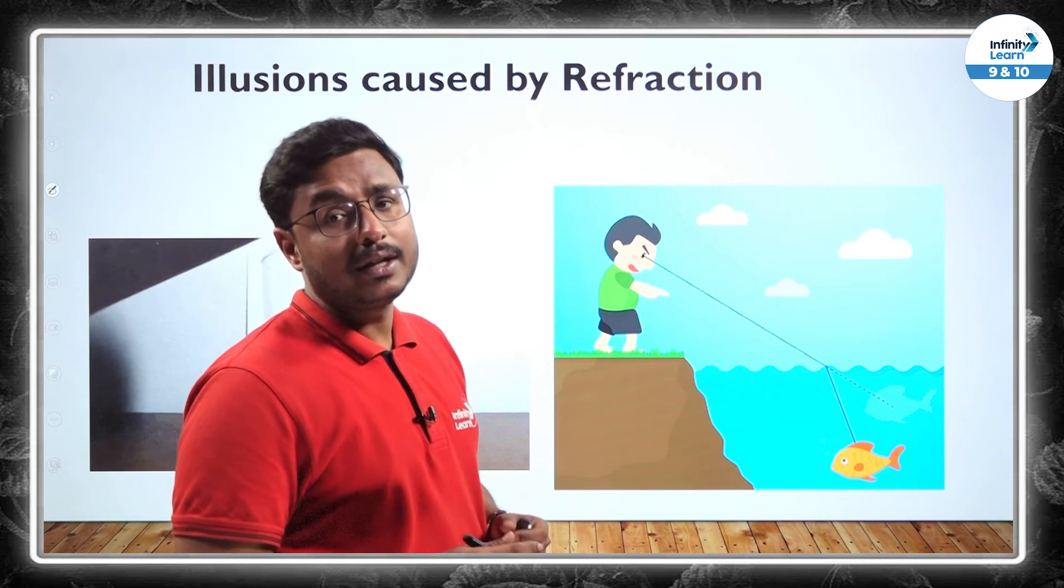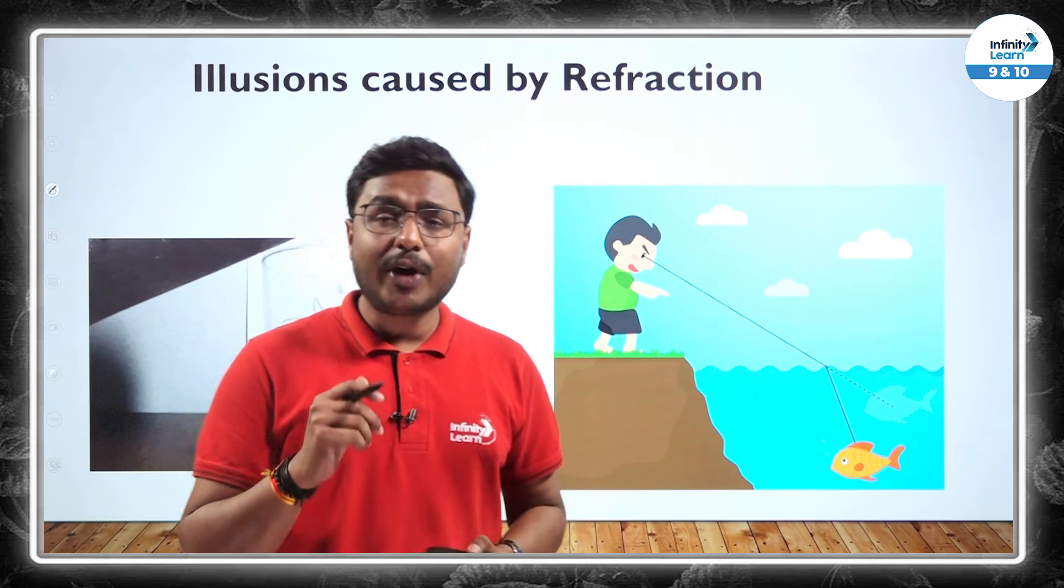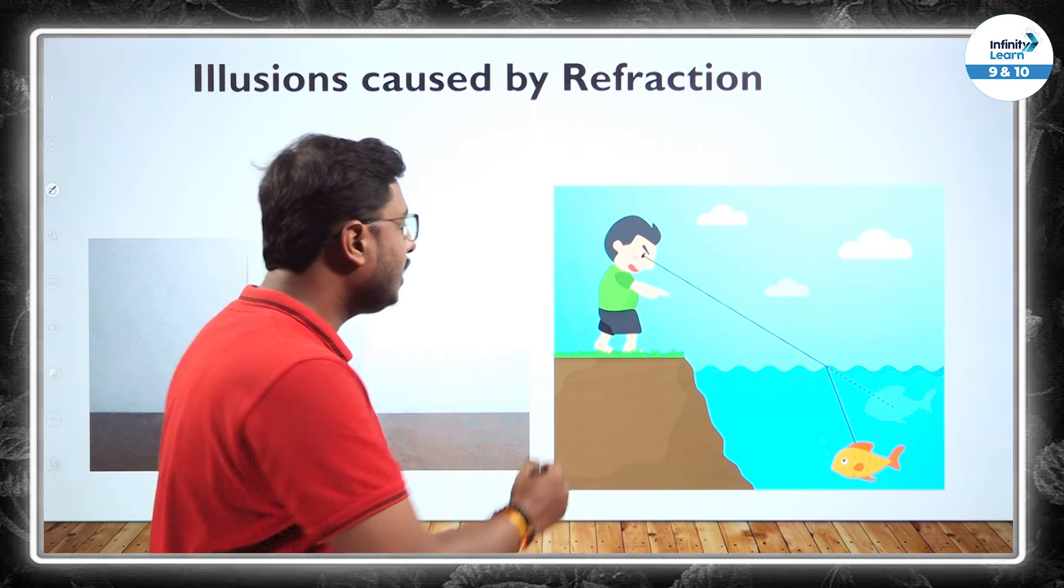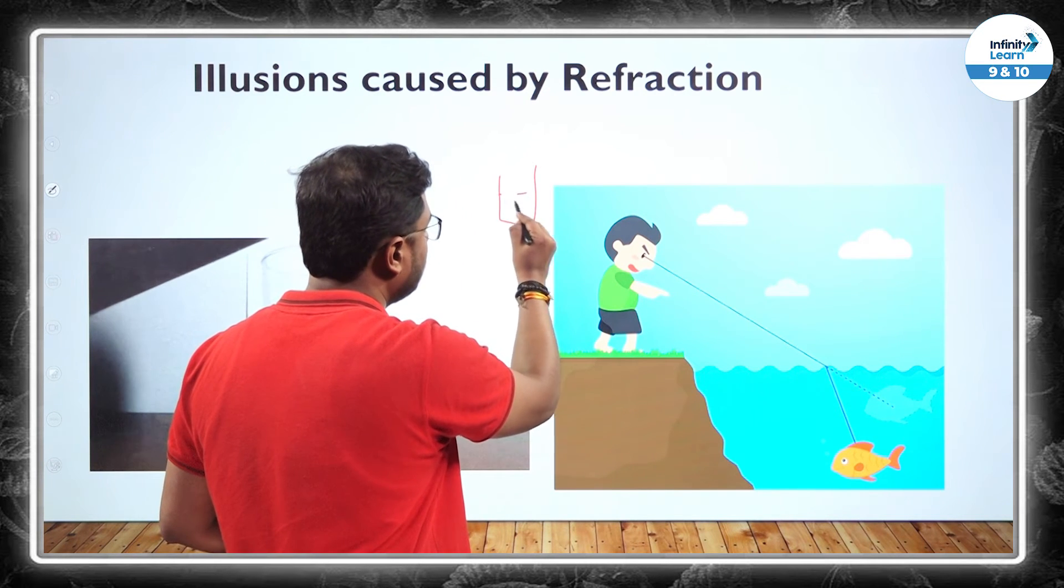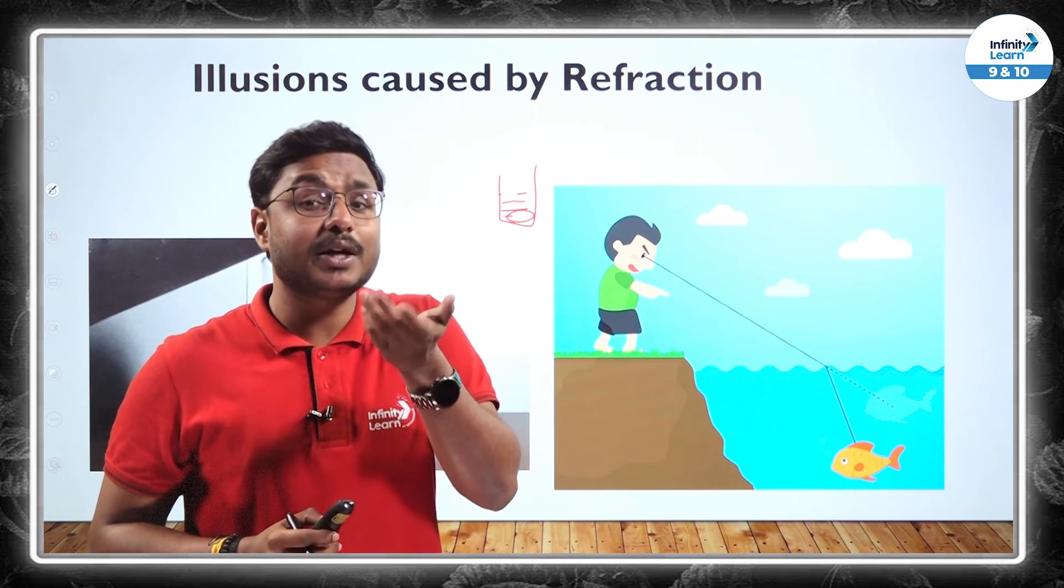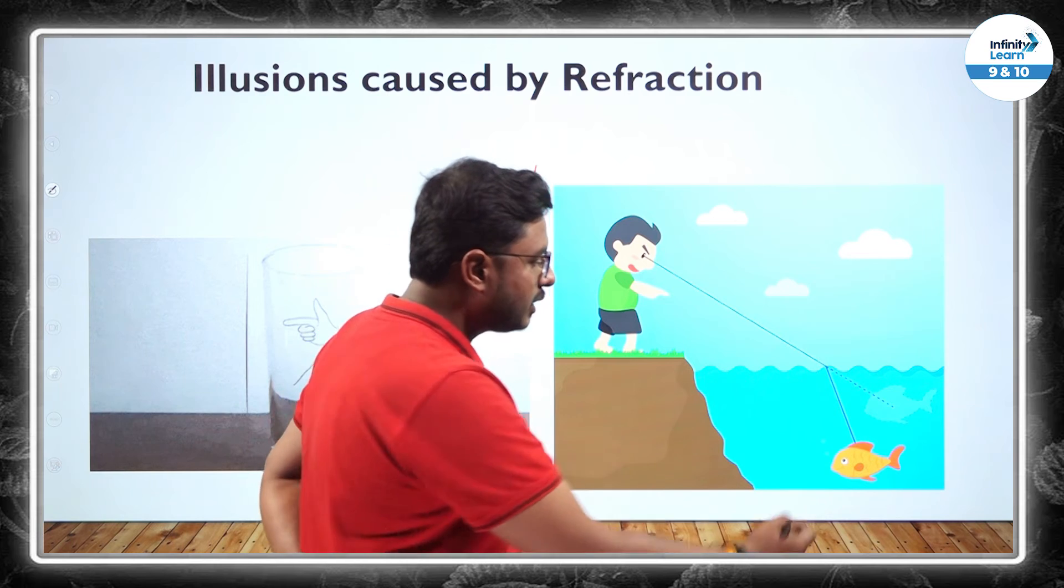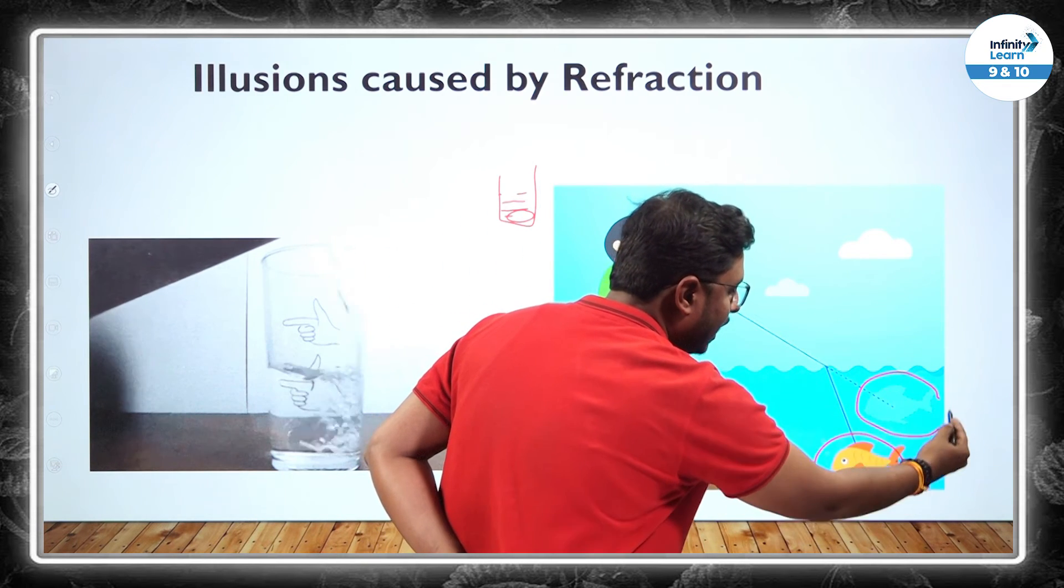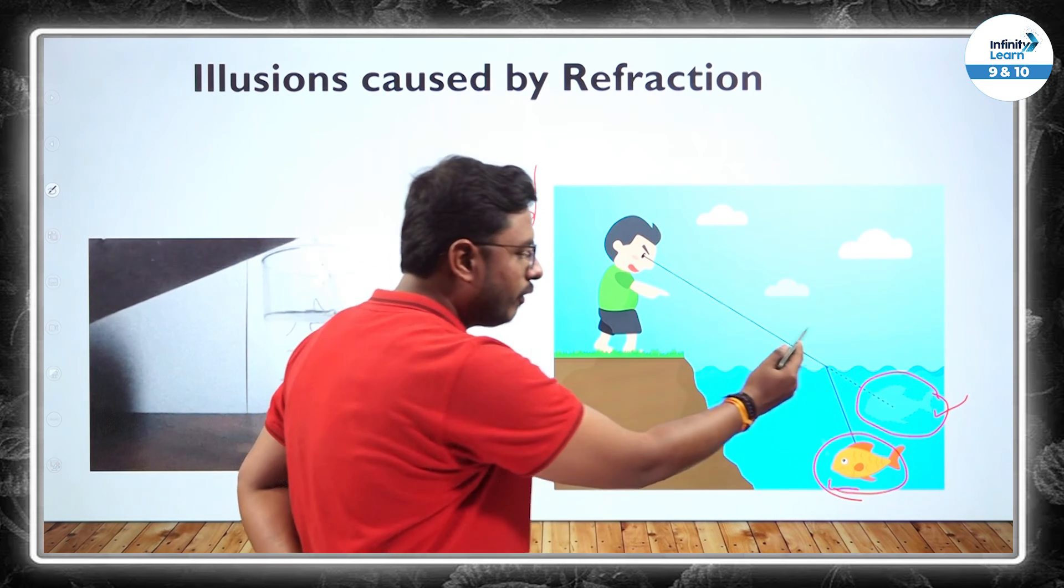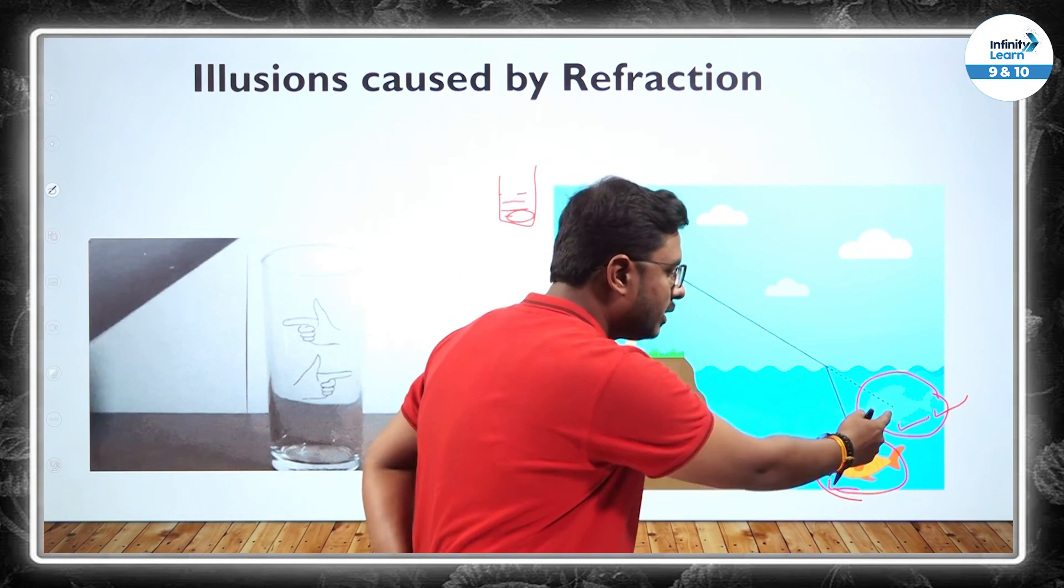Some illusions which we are able to see, that is happening because of the refraction. And why this is happening? Again the same concept. This is the concept where what is happening, you can also do this. Take a beaker, fill it with the water and place a coin. So what you are able to observe there, coin's position will be a little bit above you. Actual position will not measure you. And that same thing is happening here. This is the actual position, but where we are able to see it, at this position. This is happening because of refraction.